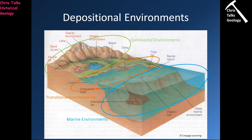This diagram from the textbook shows the three broad areas. Continental environments include alluvial fans, sand dunes, lakes, glaciers, and fluvial systems like rivers and streams. Transitional environments are typically coastal — spending time above and below sea level — including beaches, deltas, tidal flats, barrier islands, and lagoons. Marine environments are completely submerged underwater, including the continental shelf, organic reefs, the deep marine environment, and submarine fans and turbidity currents.